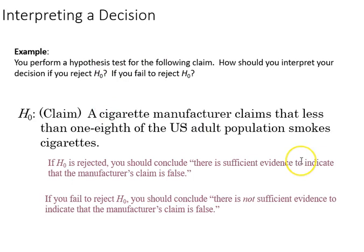So going back to our example of the cigarette manufacturer claiming that less than an eighth of the US population smokes. In this case, if H0 is rejected, you would conclude there is sufficient evidence to indicate that the manufacturer's claim is false. If you fail to reject H0, you should conclude there's not sufficient evidence to dismiss the manufacturer's claim.